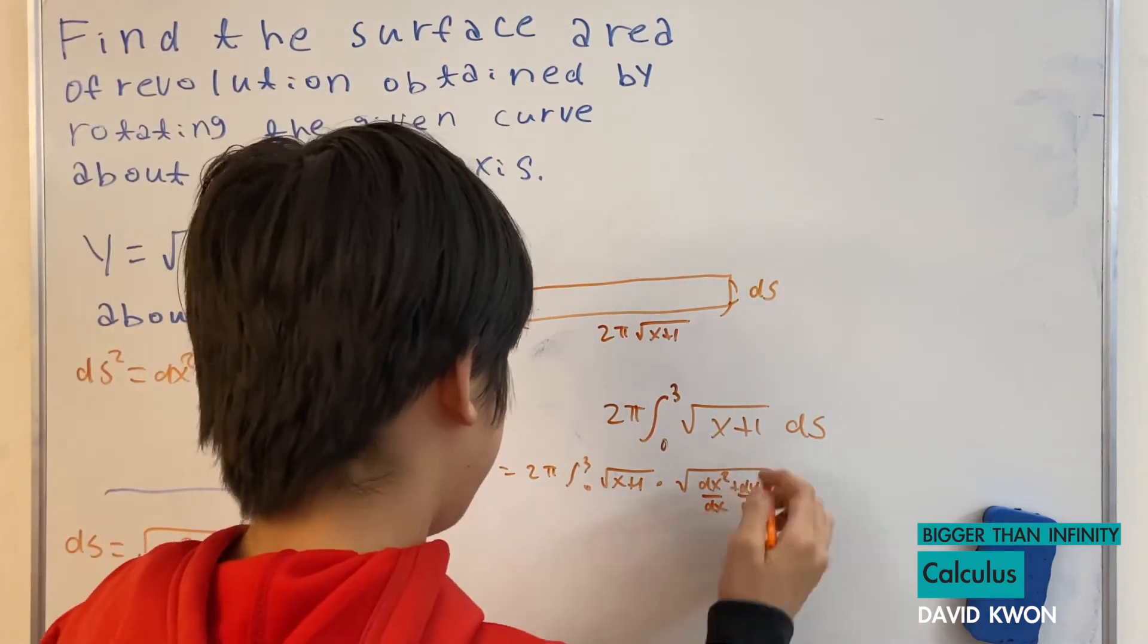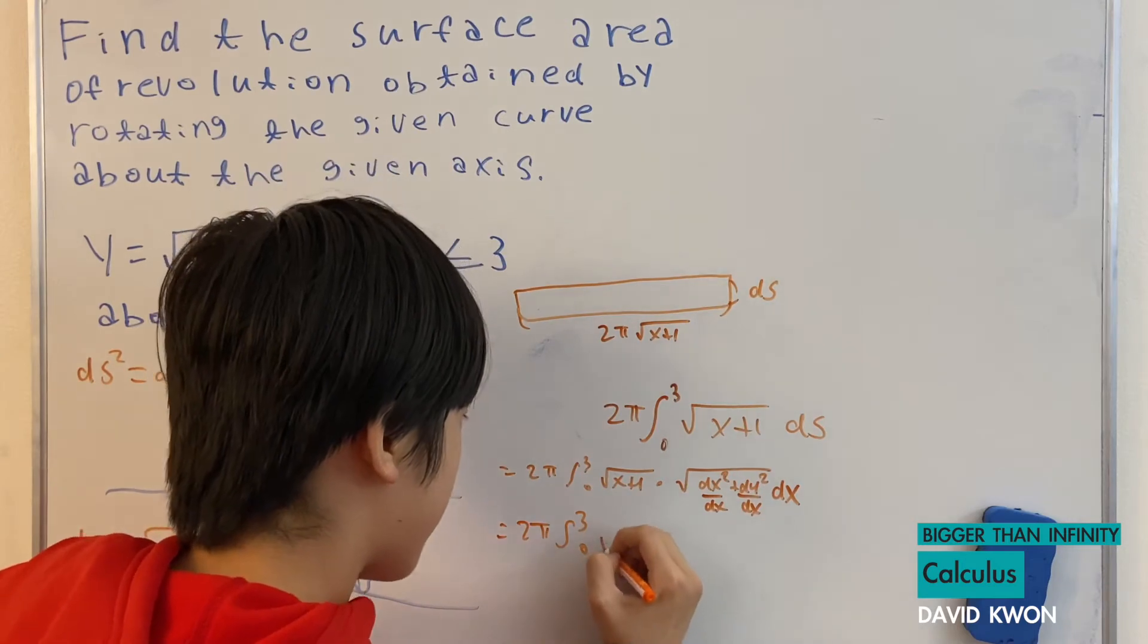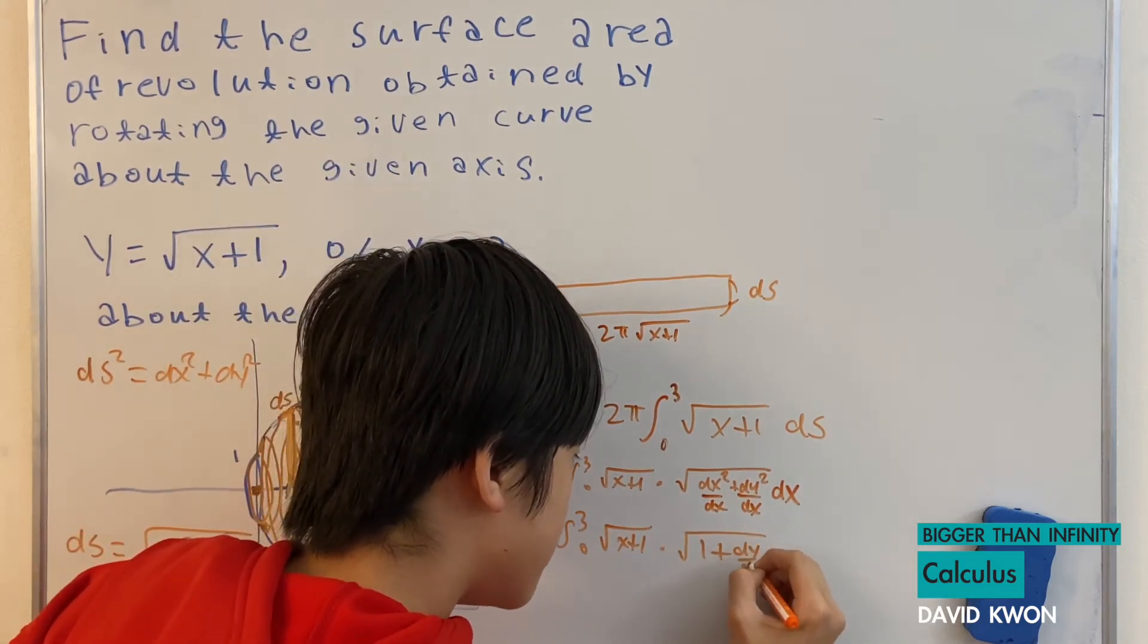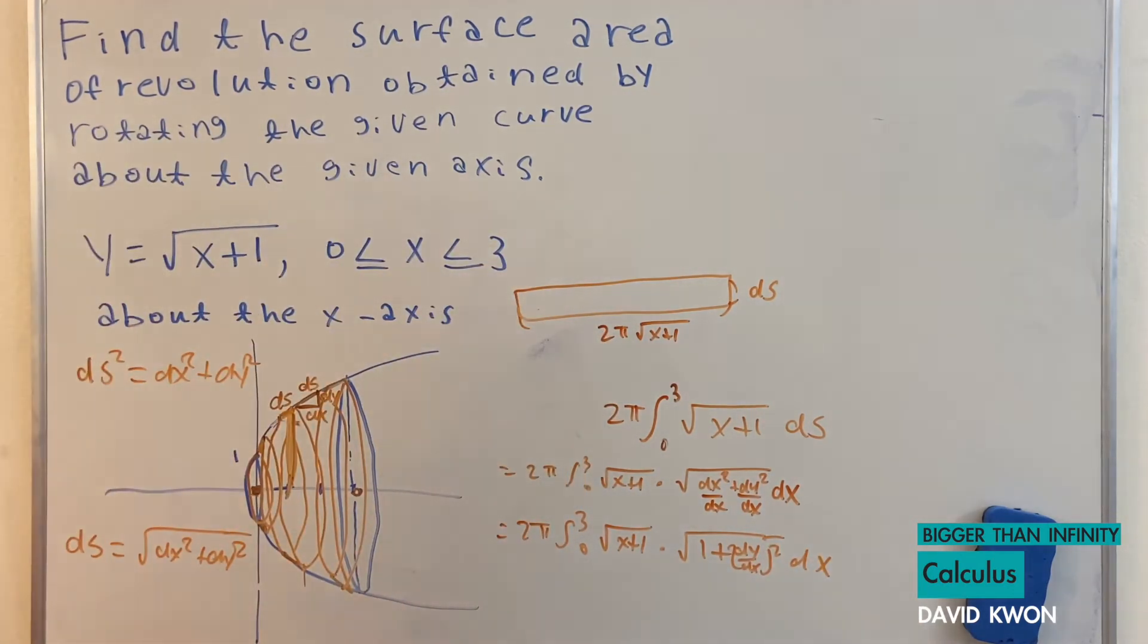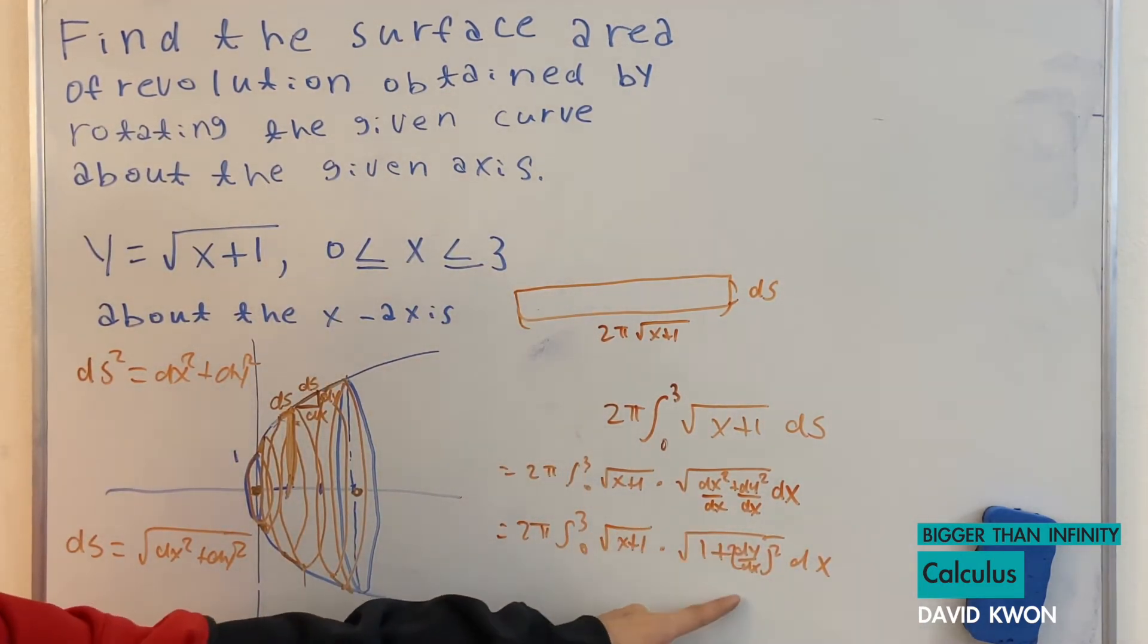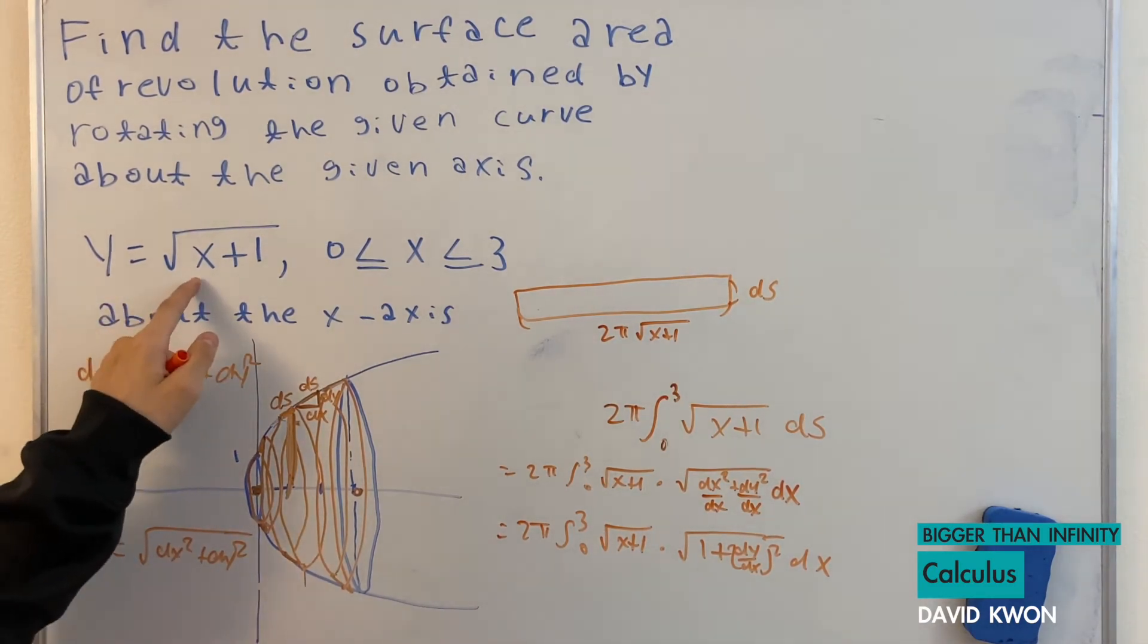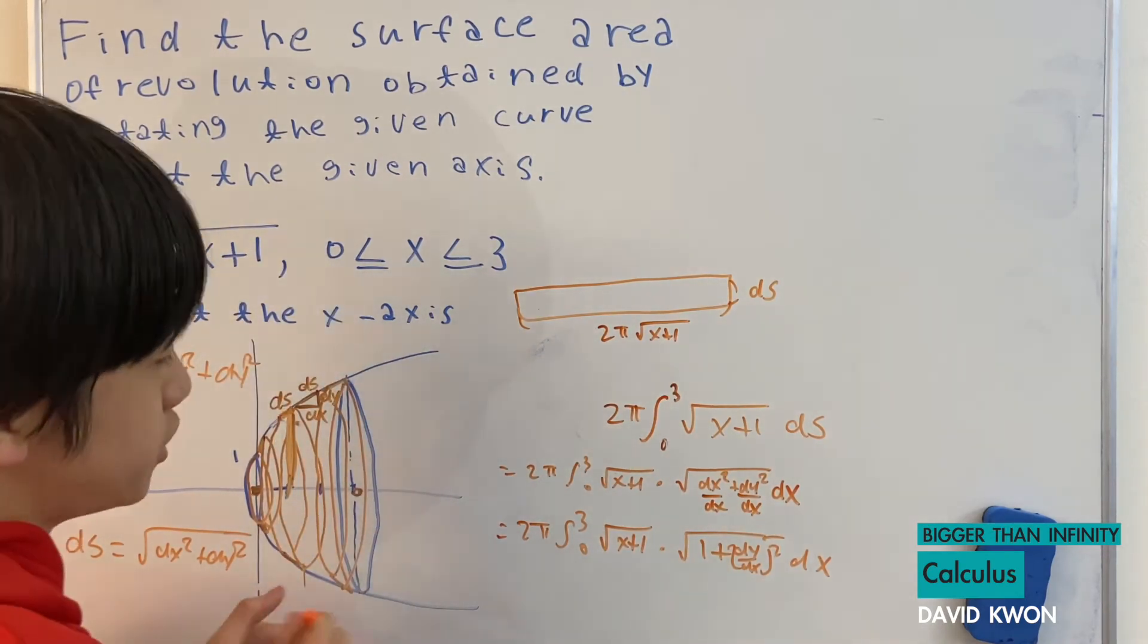So this whole thing can be rewritten as 1 plus dy over dx squared times dx. And now let's find the value of dy over dx. That's just differentiating that. Very simple. Which, if we do, I will switch colors now.